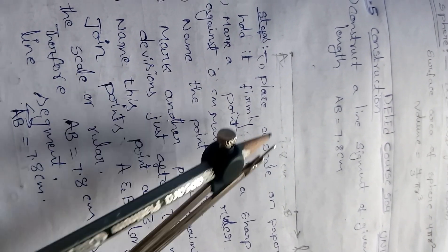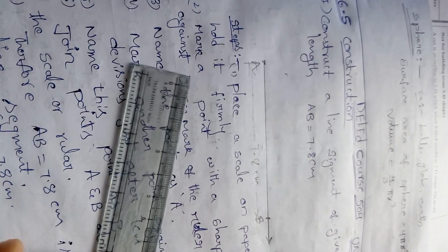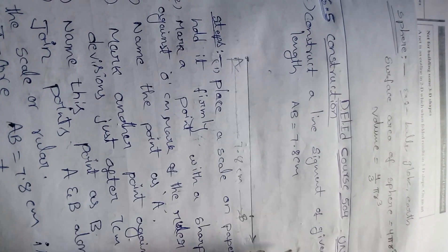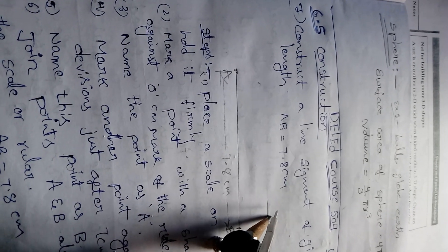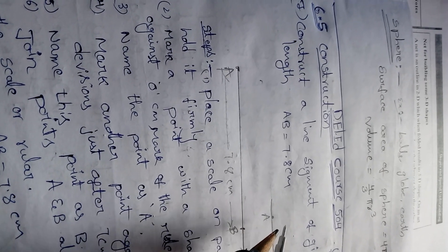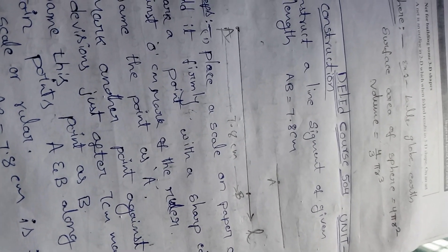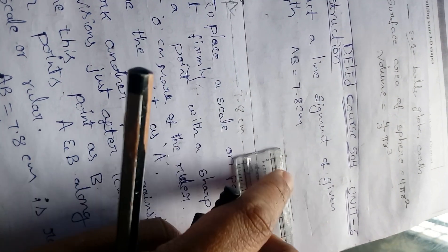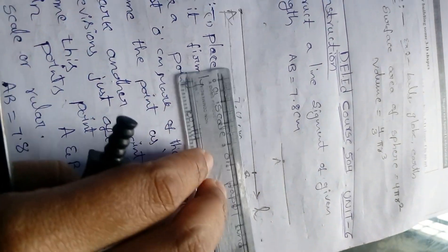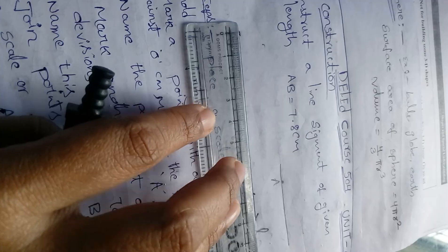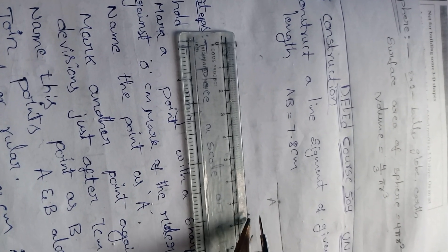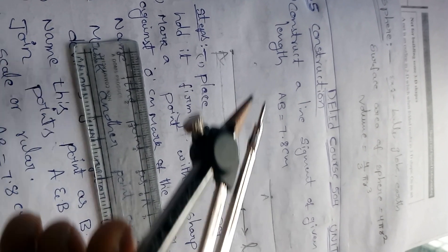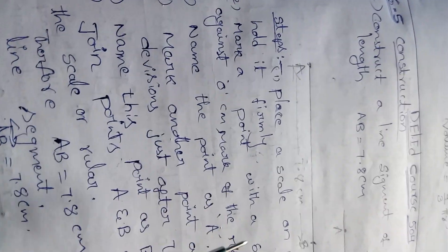This is very easy and simple. To construct a line segment of a given length, first we have to draw one line, locate one point and name it as A. Take the scale at zero — from zero we have to locate up to 7.8 centimeters. Same like this, from A, mark 7.8 here and put a point there and name it as B. So AB is 7.8 centimeters.